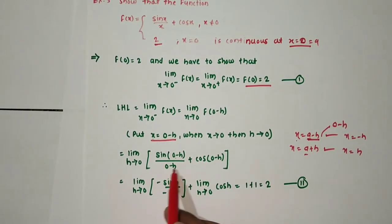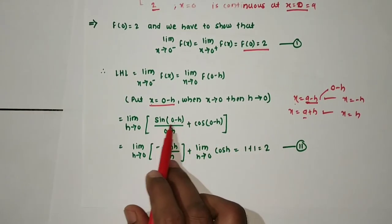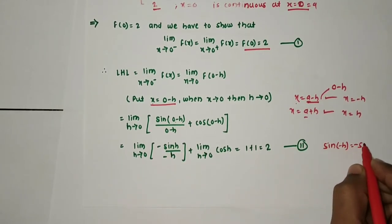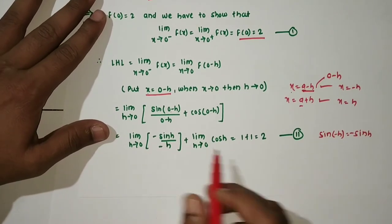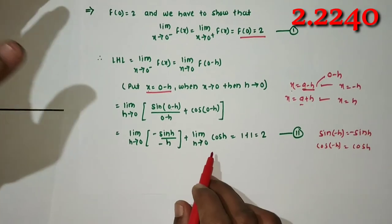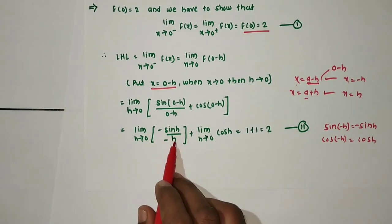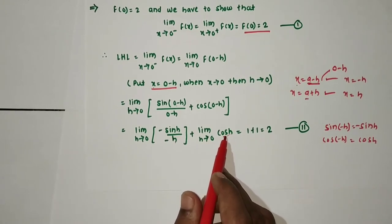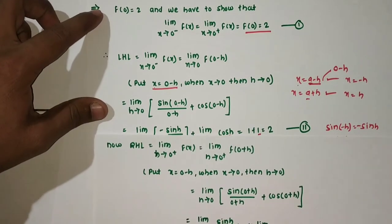For left hand limit: limit h→0 of sin(0 - h)/(0 - h) + cos(0 - h). Since sin(-h) = -sin h, we get (-sin h)/(-h) + cos(-h) = sin h/h + cos h. As h→0: sin h/h = 1 and cos(0) = 1, so left hand limit = 1 + 1 = 2.